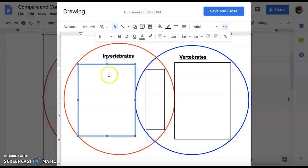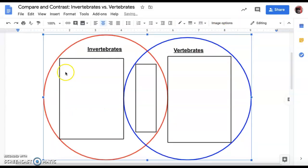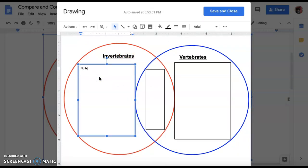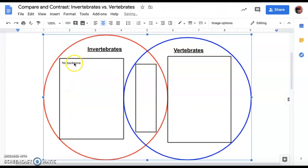By the way, when you're done typing in all your answers, you must hit save and close for everything to show up. So for example, if I added here, no backbone, I save and close and it's there and published.